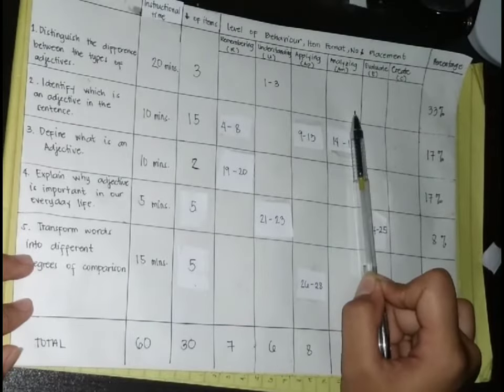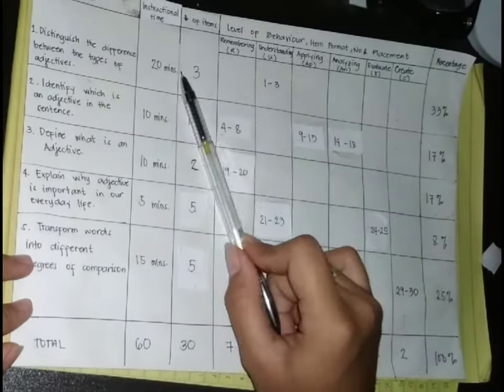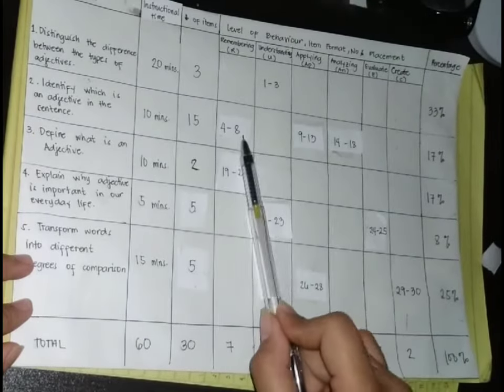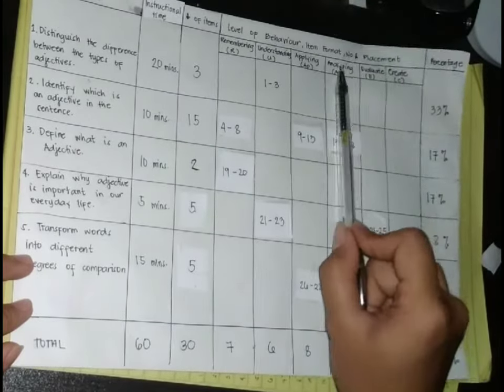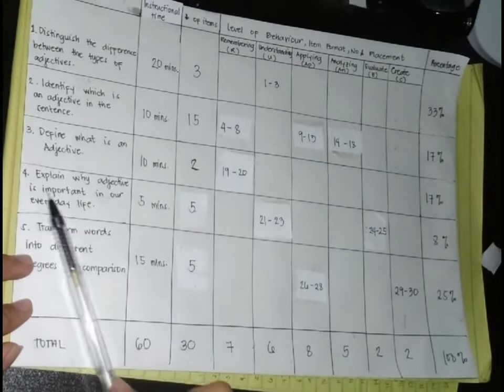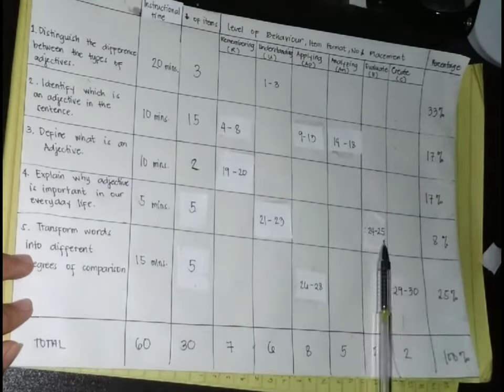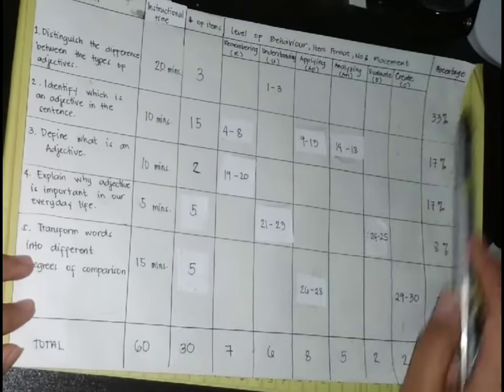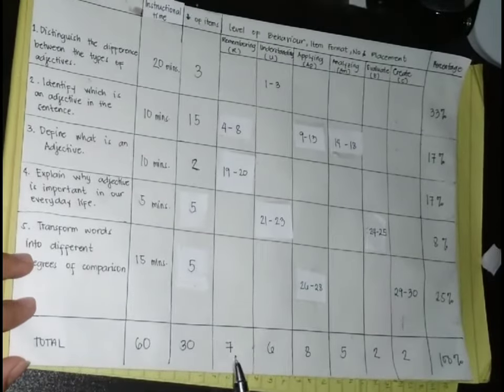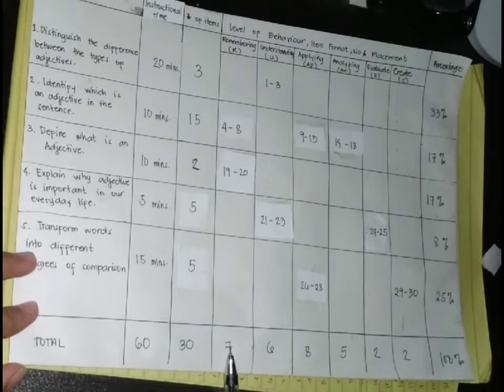Now we have created a table of specification for your test by aligning your objectives to Bloom's taxonomy. It's time to determine the test types that will accomplish your testing objectives. For example, knowledge questions can be accomplished easily through multiple choice questions or matching type exams.